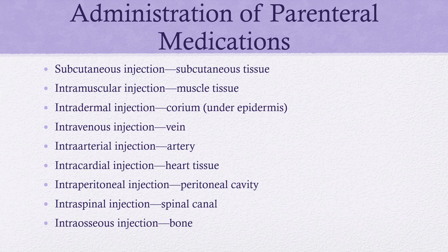When we talk about intramuscular, it is quite the opposite — those muscles are very vascular, they have a great blood supply, and that medication absorbs much faster. The intradermal is when we're injecting right below the epidermis into the dermis; there's not much blood supply so absorption is even slower than subcutaneous. It's important to note that because the reason we give these different injections is often because we want to control how quickly the medication is absorbed.